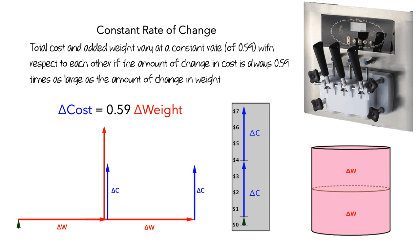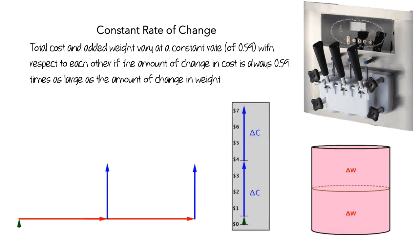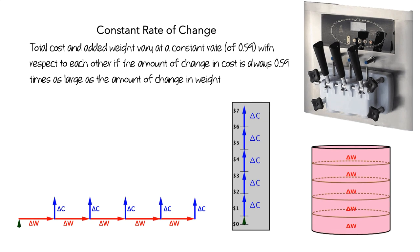What if we had used a different number of sections? Let's split the added weight into five sections. It's still the case that, for each of the five sections of change in weight, the amount of change in cost is about 0.59 times as large as the amount of change in weight.